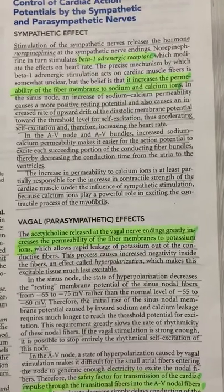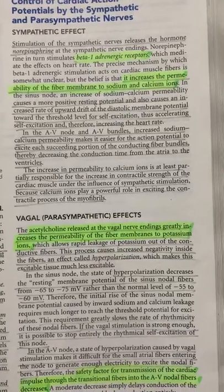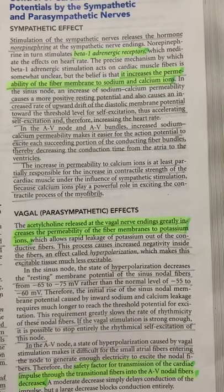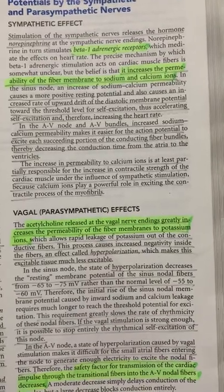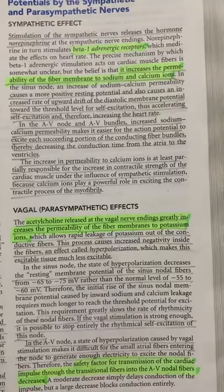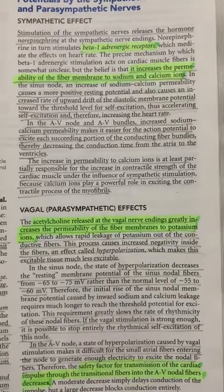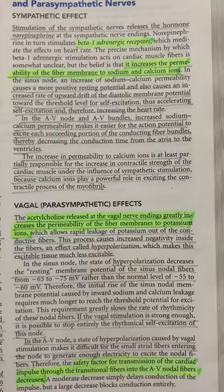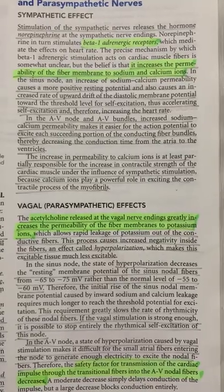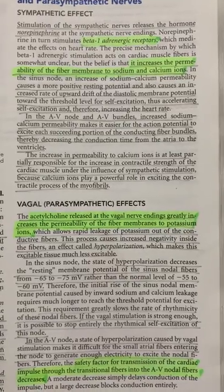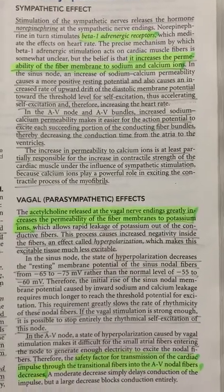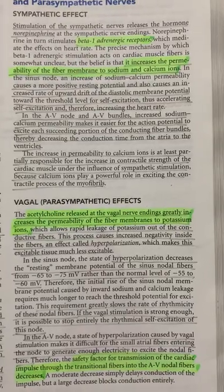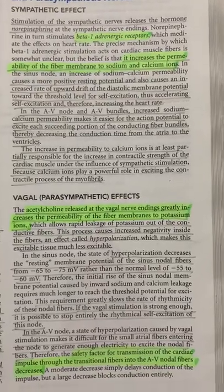In the AV node and AV bundles, increased calcium permeability makes it easier for the action potential to excite each succeeding portion of the conducting fiber bundles, decreasing conduction time from the atria to the ventricles. The increase in permeability to calcium ions is also partially responsible for the increase in contractile strength of cardiac muscle under the influence of sympathetic stimulation.